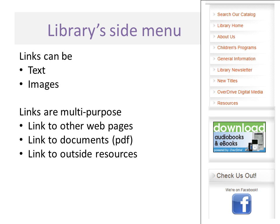Our site menu has typical library web page features: searching the catalog, About Us, Contact Us, and various links — some in text, some as images. For example, the OverDrive download button is right on our homepage for people who just want a quick link. Some links go to another web page; some, like the library newsletter, link directly to the document itself. Links serve a variety of purposes depending on what your needs are.